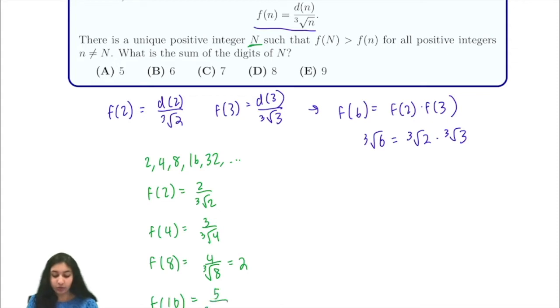We have 5 over the cube root of 16, this is less than 2. So f(8) is actually our largest, so that tells us that the power of 2 we want is 2 cubed.